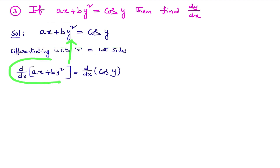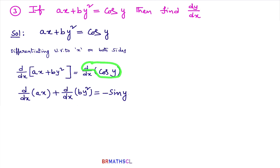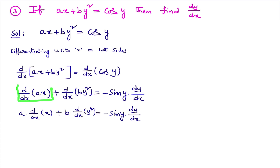Differentiating with respect to x on both sides: d/dx of (ax + by²) = d/dx of cos y. We differentiate each term: d/dx of ax + d/dx of by². Now d/dx of cos y — I am differentiating with respect to x, given function is cos y which is in terms of y. As these two are different, derivative of cos y is −sin y, and since the function is in terms of y and we differentiate with respect to x, we write × dy/dx. So d/dx of cos y = −sin y × dy/dx.